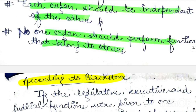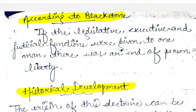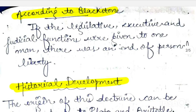Blackstone has defined separation of power. He says that if the legislative, executive, and judicial functions were given to one man, there would be an end of personal liberty. If we assume that the same body or the same person is assigned the functions and powers of Legislature, Executive, and Judiciary, what do you think — will it be a proper system? Will you be able to establish a welfare state? No — this would destroy personal liberty and nothing would work.